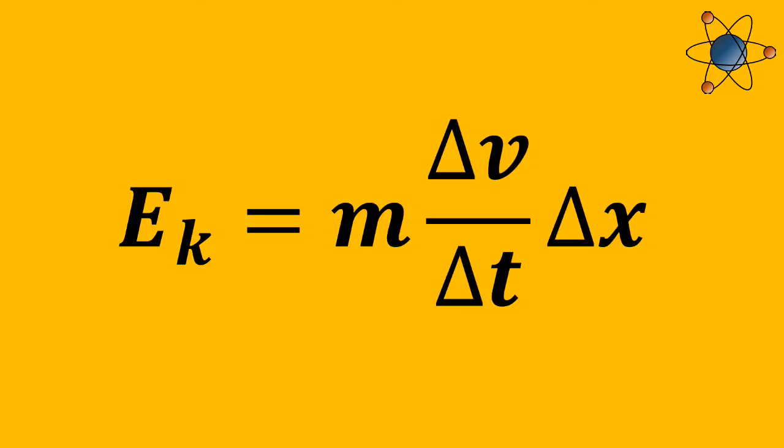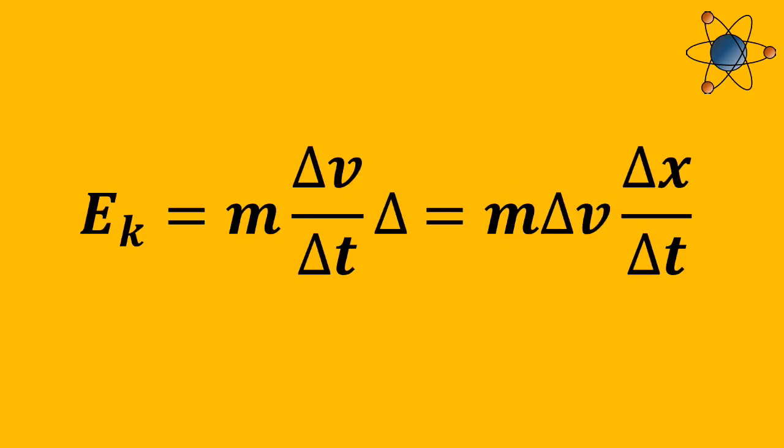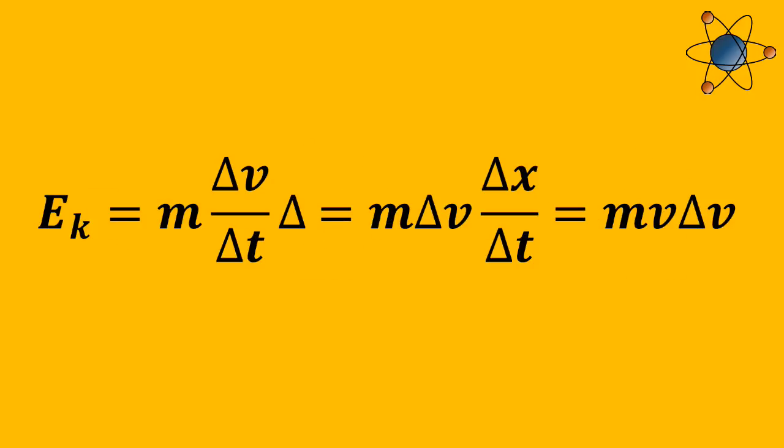which is equal to its mass times the change in velocity divided by the change in time, its acceleration, times the distance moved, which I've written here as delta x. Now I'm going to rewrite this kinetic energy as mass times the change in velocity times the change in distance over the change in time, which is equal to the mass times the velocity times the change in velocity.